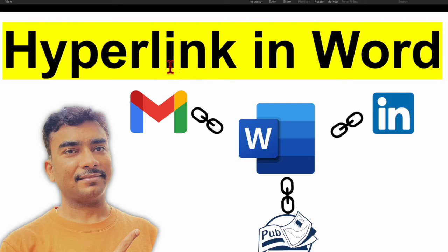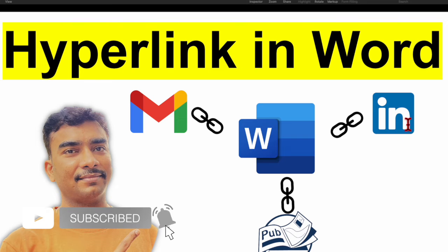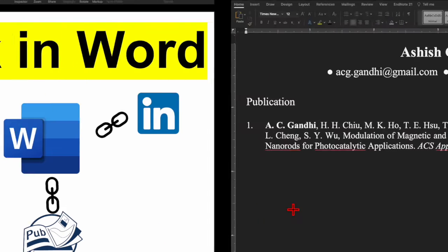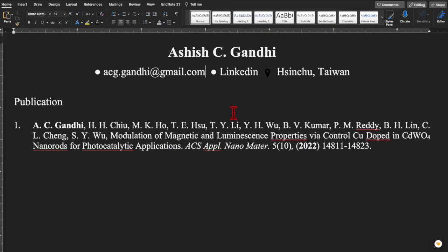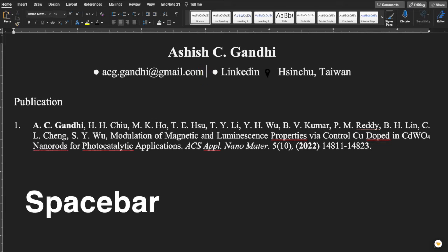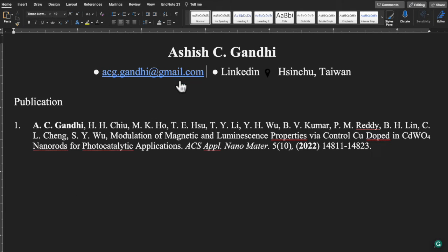In this video I want to show you how to hyperlink in Microsoft Word, like an email ID, LinkedIn profile, or a publication. Type the email ID and just press the space bar, so the email ID will get automatically hyperlinked.